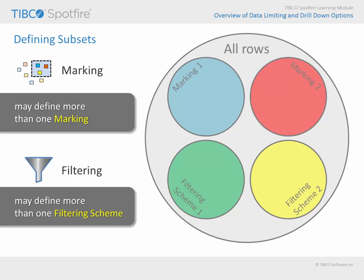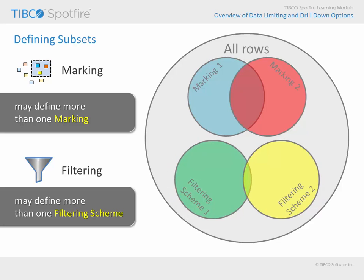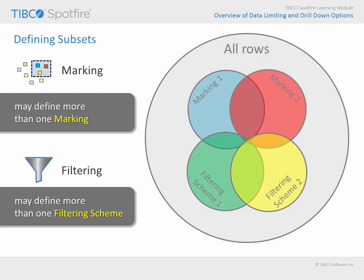Now, we need to factor in that some visualization configuration options can be applied which allow you to leverage more than one marking to identify data of interest, thus presenting the rows defined by the intersection of the two marking subsets. Additionally, multiple filtering schemes may be applied to limit data, thus identifying rows which meet all of the filtering criteria in both filtering schemes. The visual impact of marking and filtering may also overlap, further complicating the picture.